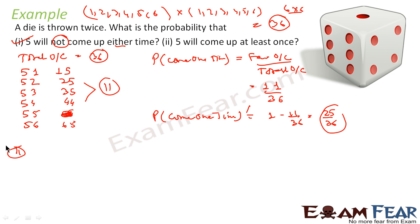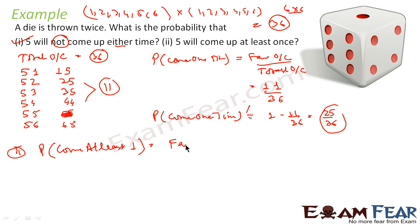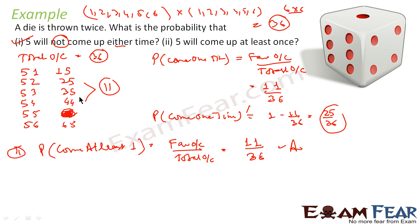The second part asks for the probability that 5 will come at least once. That is the favorable outcome over total outcome = 11/36. Please note that (5,5) appears twice in our listing, so ignore the duplicate — do not write it twice or you will get a different answer.